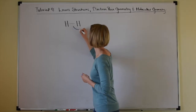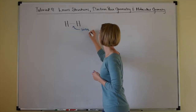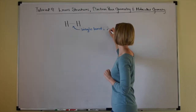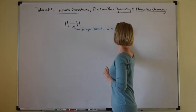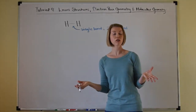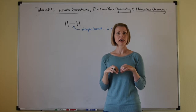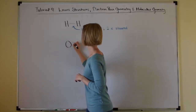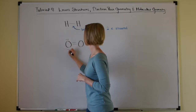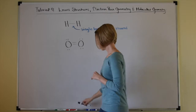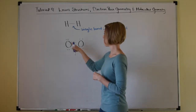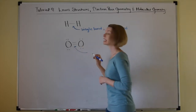A single bond represents just two electrons being shared in a covalent bond. But two atoms can also share four electrons in a covalent bond, like what happens when two oxygen atoms combine to form a diatomic molecule of oxygen. I'm going to show that with two lines here — each line represents two electrons being shared in that bond — and we call this a double bond.